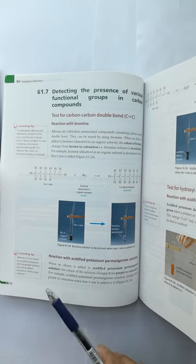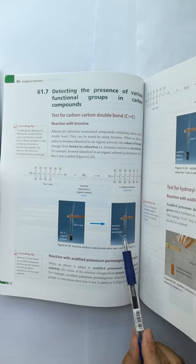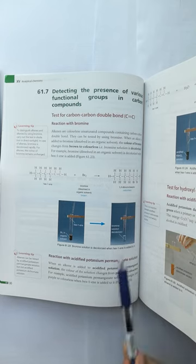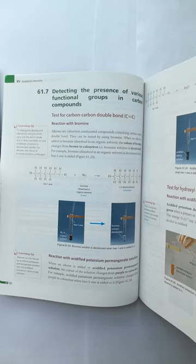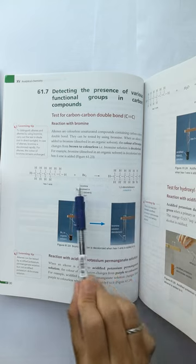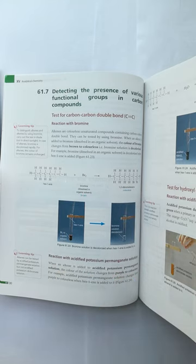And the result is it turns from brown to colorless rapidly. And the reaction is an addition reaction, each carbon bonds with one bromine atom.